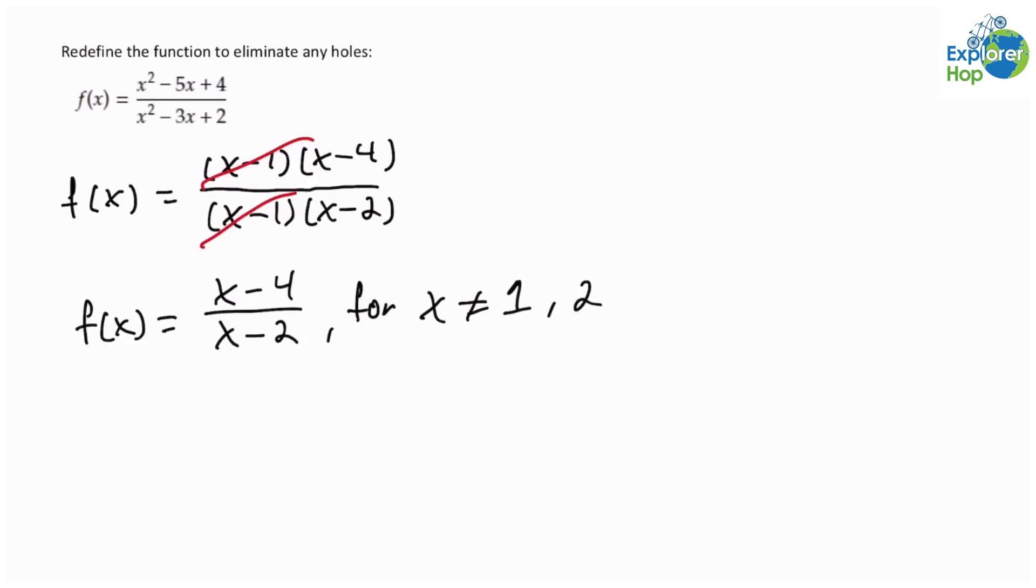Notice that since we were able to cancel out x minus 1, then f(x) has a point discontinuity at x equals 1. And since x minus 2 is still in the denominator, then f(x) has an infinite discontinuity at x equals 2.